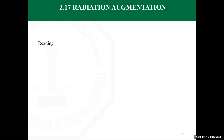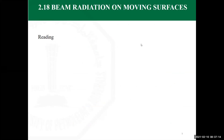The sections on radiation augmentation, beam radiation on moving surfaces, and average radiation on sloped surfaces in the case of isotropic sky are assigned as readings and will not be covered in detail here.